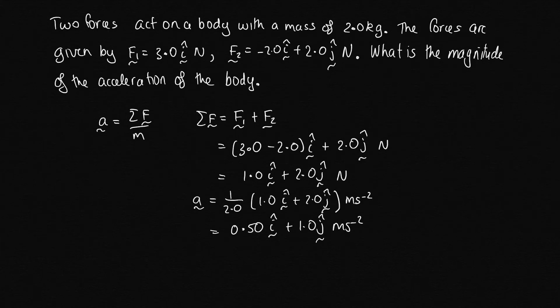So we've now found the acceleration in unit vector notation, but it's asked us for the magnitude of the acceleration. So now we need to convert this to a magnitude. So to do that, we've got 0.50 in the i direction and then 1.0 in the j direction. And the magnitude is up here like this. So we can use Pythagoras' theorem.